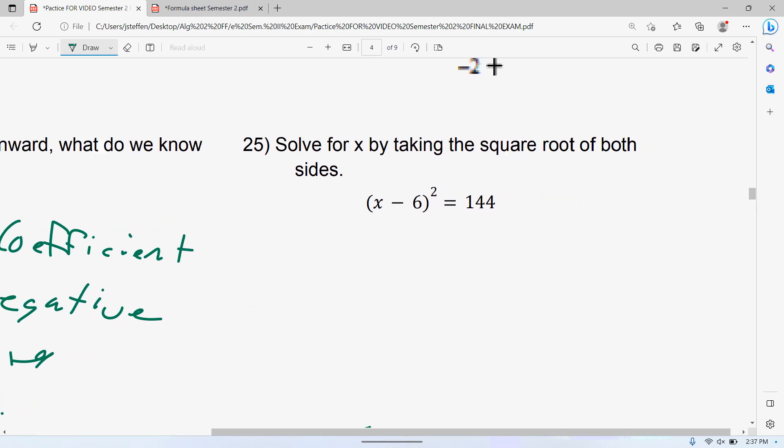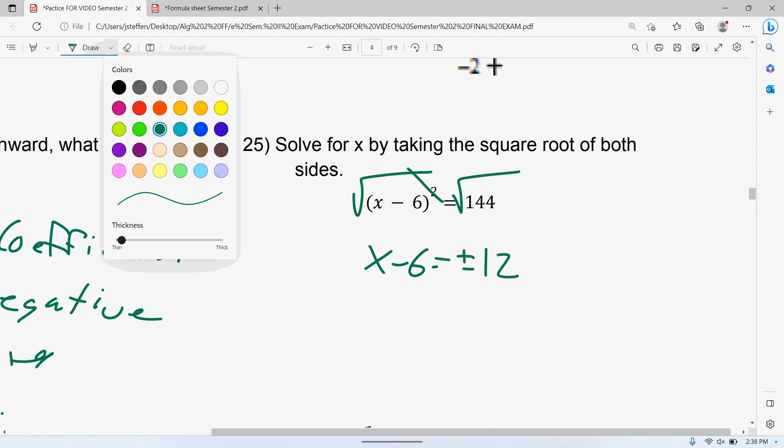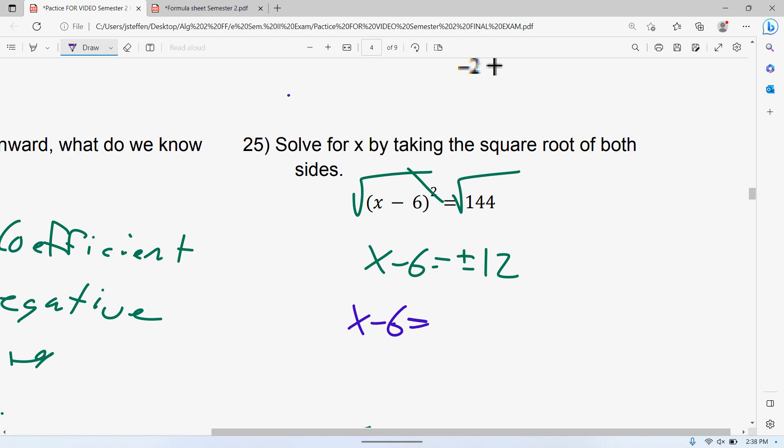25, solve by taking square root. So the tricky thing about this one is you take your square root, so that's not too bad. 144 square root is 12, but remember it's plus or minus. So really that gives us x minus 6 is equal to positive 12, x minus 6 is equal to negative 12. You'll notice some of you guys will add 6 to both sides and you'll say that's 18. Okay, so plus and minus 18? Well no, that's not actually the case. You have to be careful with that. x is equal to 18, x is equal to negative 6. So 18 and negative 6 is your answer.